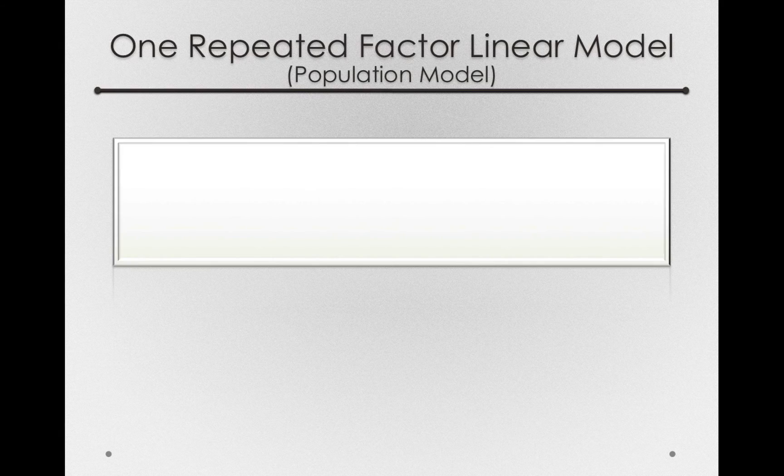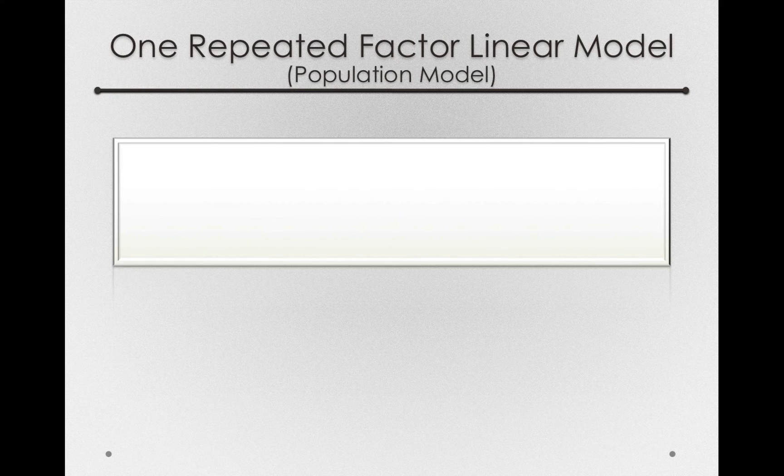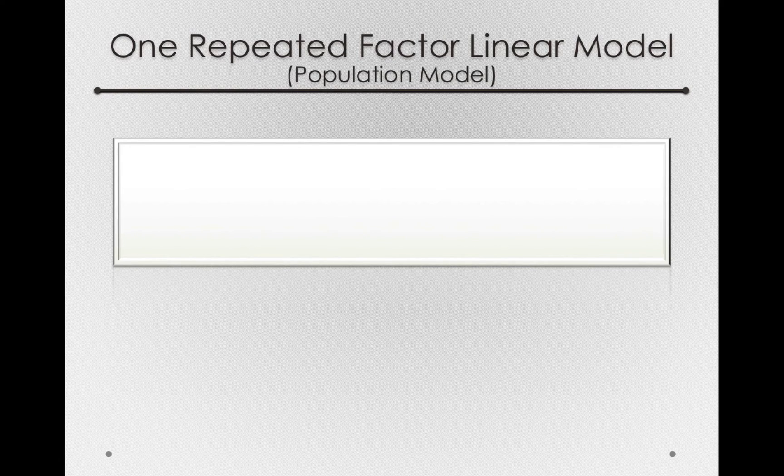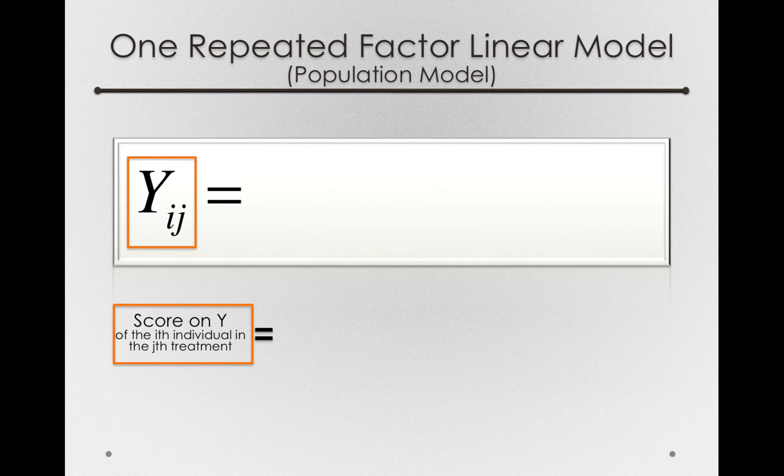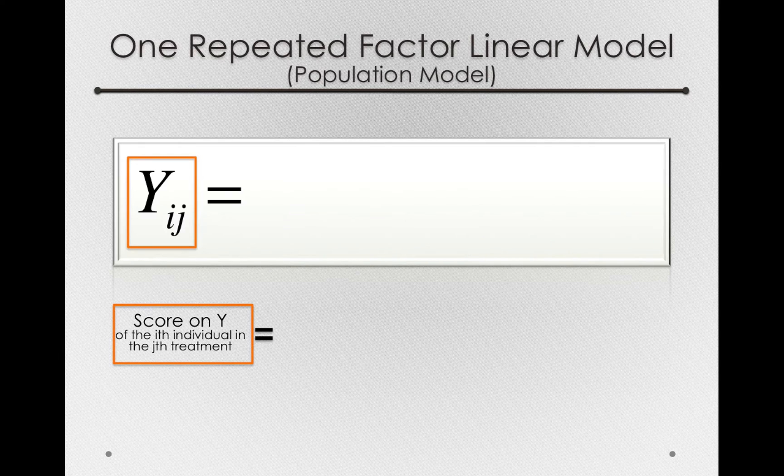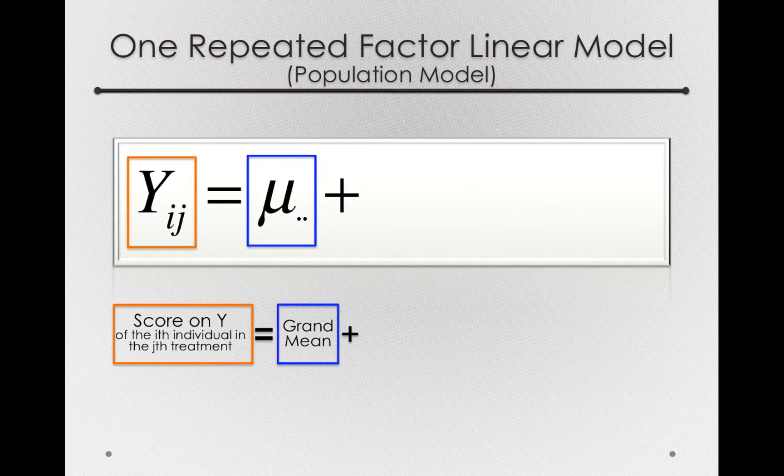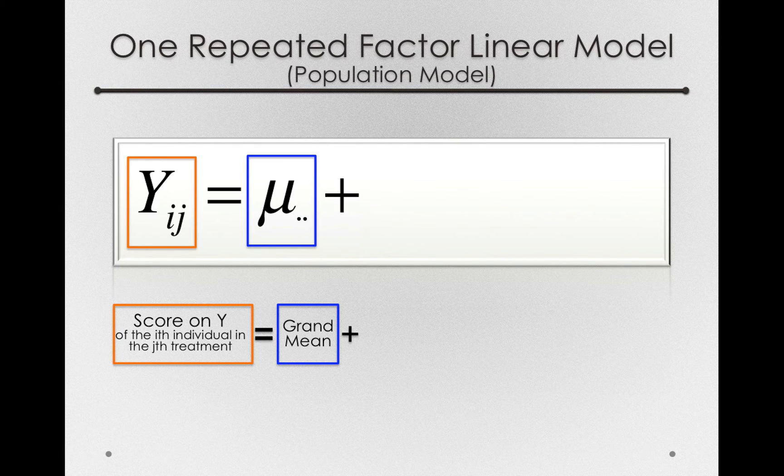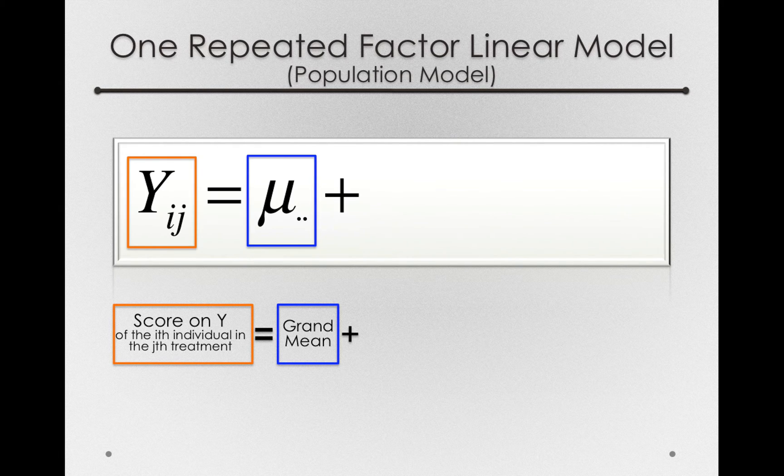So, now, let's look at our one repeated factor linear model, and we'll start like usual with our population model. Like always, we're seeking to estimate or explain the y_ij's, so the score on Y for the i-th individual in the j-th treatment. As usual, we'll start with a grand mean, so the mean over all observations. We want to pull that out of our data before we start estimating the structure.